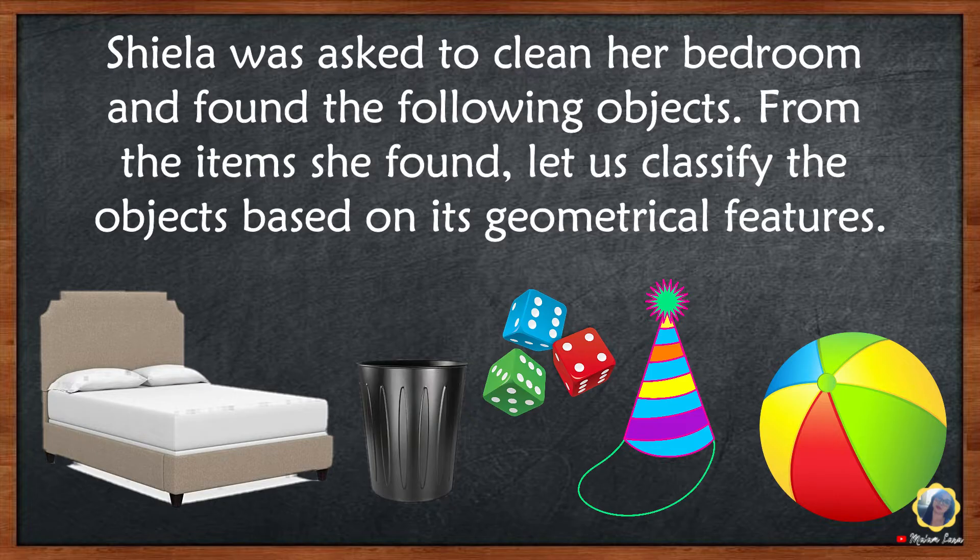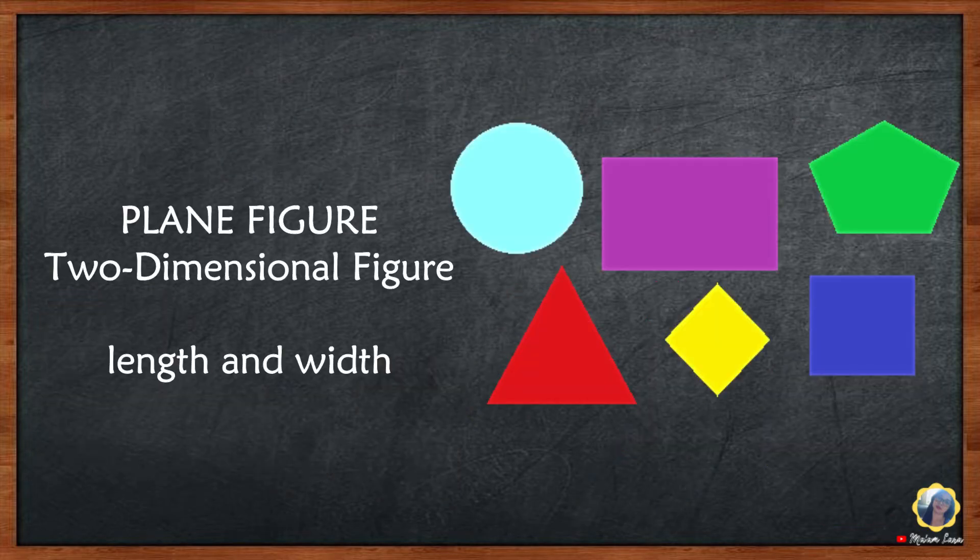Rectangles, squares, circles, and triangles are examples of plane figures or two-dimensional figures. It has two dimensions: length and width.